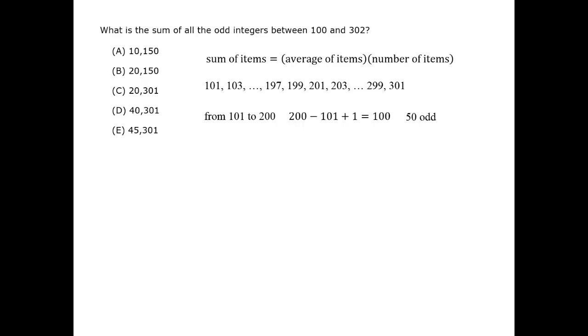So altogether, for the full span, we are talking about a number of odd numbers that's 50 odd numbers plus 50 odd numbers plus 1 odd number, 101 odd numbers, where that final one is the 301 at the end.